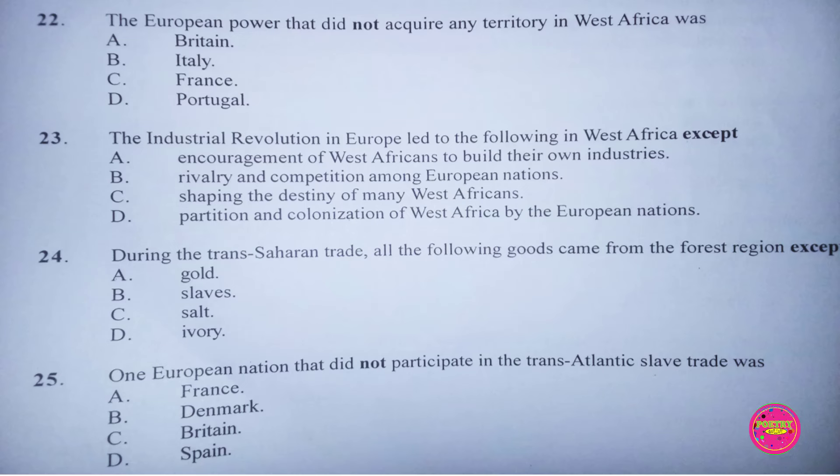Question 22. The European power that did not acquire any territory in West Africa was: A. Britain, B. Italy, C. France, D. Portugal. The correct answer to this question is B. Italy.